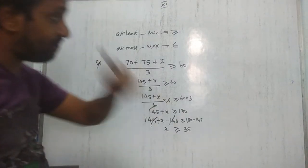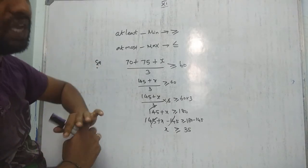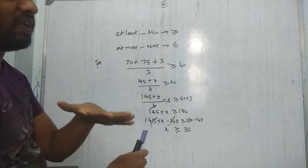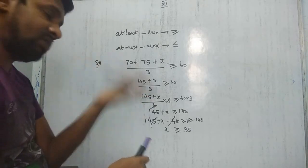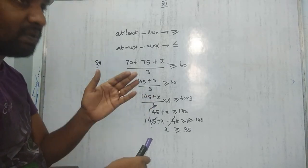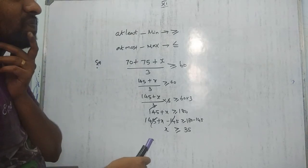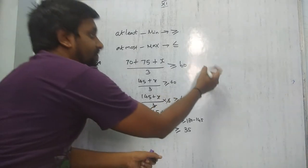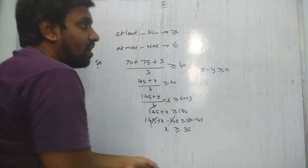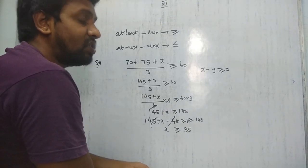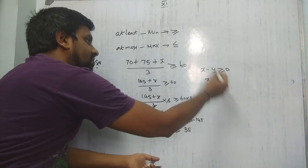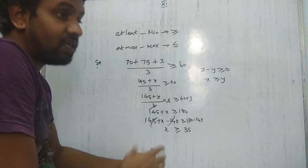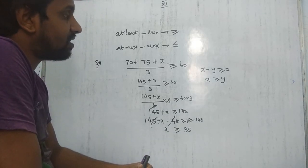Summary of shading rules: y > x means y is bigger — shade towards y-axis. 2x < y means y is bigger — shade towards y-axis. 2x > y means x is bigger — shade towards x-axis. For x - y ≥ 0, rearrange to x ≥ y, so x is bigger — shade towards x-axis.